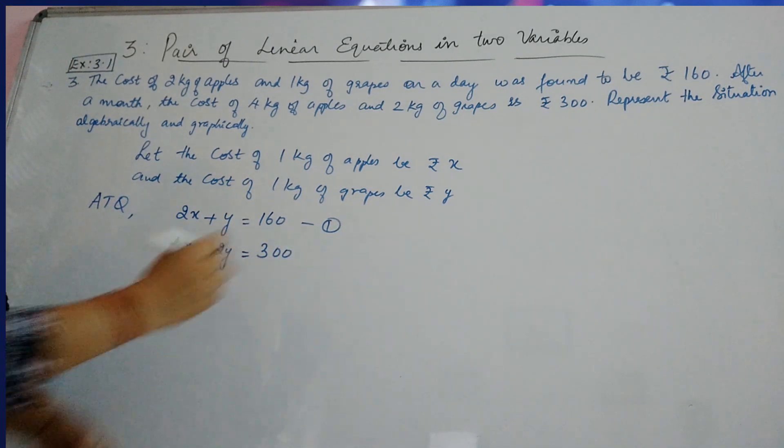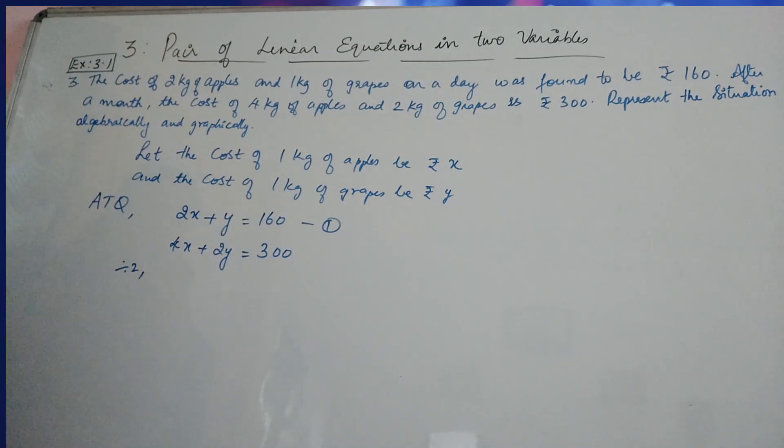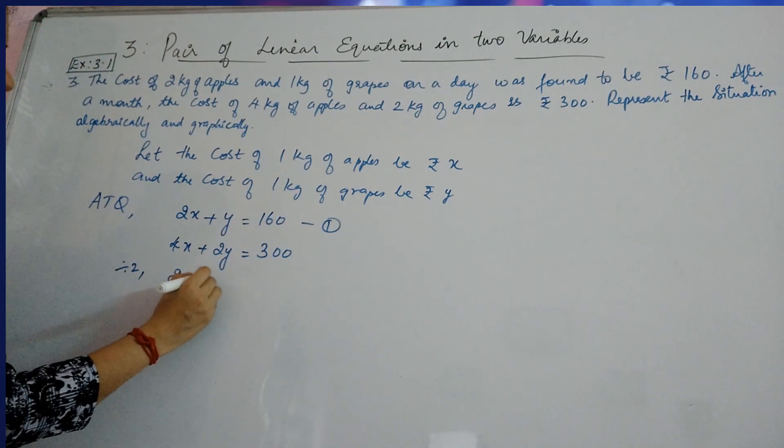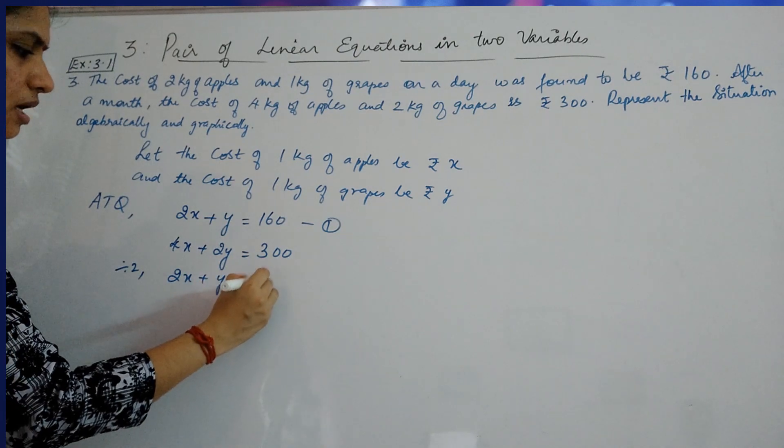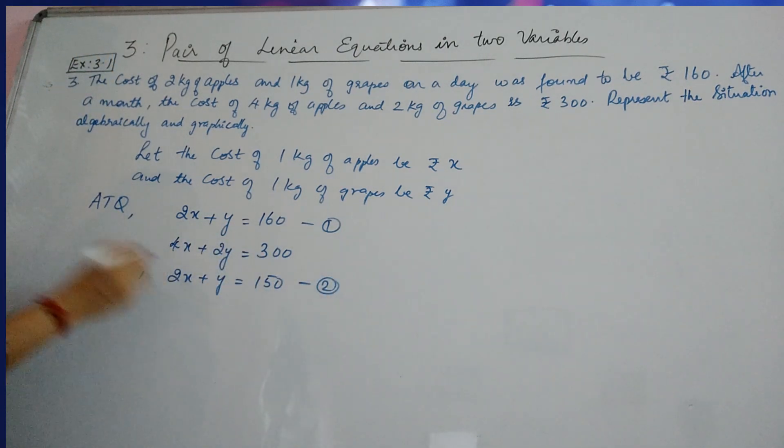So, this is the equation which you will get. And this can be reduced. If you are dividing 4 by 2, you will get 2x plus Y is equal to 150, which is equation number 2. So, this equation has been reduced to this one, and this will be more easy for your simplification or your graphical representation.